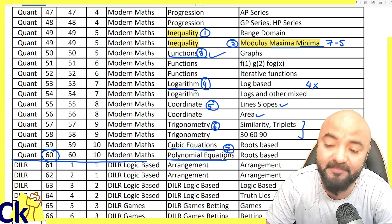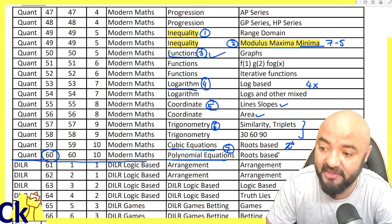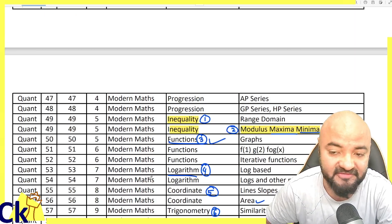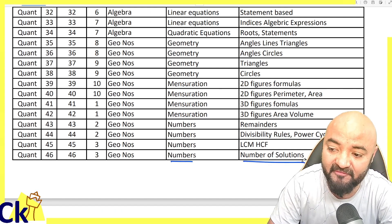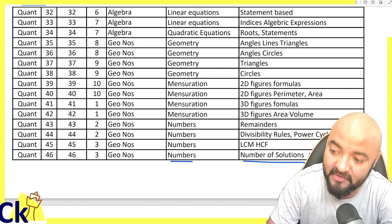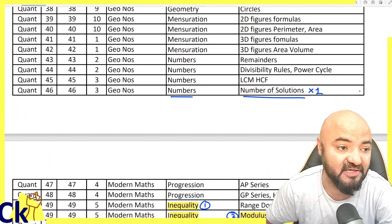Number seven is cubic and polynomial equations - power four, power five, power six. Number eight is questions where you find the number of solutions. Every year a question will come based on number of solutions.